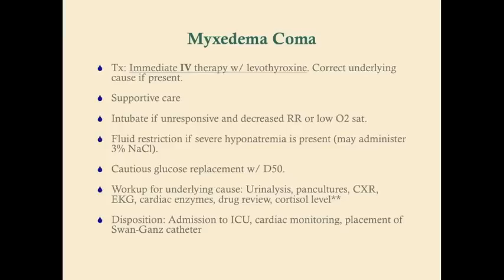You should cautiously replace glucose with D50, depending on what their glucose level is — if it's 25 you'll be more liberal than if it's 60. Once you've stabilized the patient, you should be working up for the underlying cause. Remember, the underlying cause is often infection. It could be trauma, a heart attack, or low cortisol — oftentimes that's going to be in patients with secondary or tertiary hypothyroidism. It could be drugs — sedatives like benzodiazepines, anesthetics, narcotics, amiodarone, beta blockers.